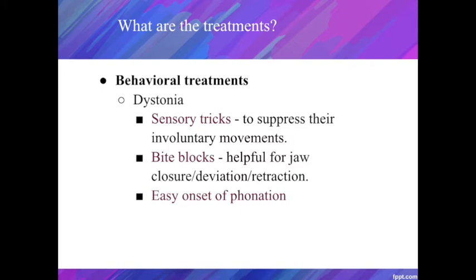For patients with dystonia, it is recommended that the clinician find and use sensory tricks that can suppress their involuntary movements, though sensory tricks seldom have long-term effectiveness and don't work for every patient. Bite blocks, commonly used by dentists to stabilize the jaw, are helpful in cases of dystonic jaw closure, jaw deviation, or jaw retraction — patients can bite down on the blocks as needed for conversation or drinking liquids. Using easy onset, the patient is first asked to exhale while producing a sigh; once soft sighs are produced consistently, the patient produces a prolonged vowel. This exercise helps the patient make softer glottal closure while phonating.